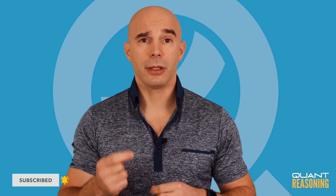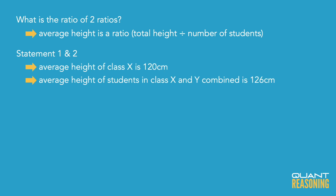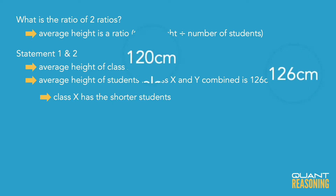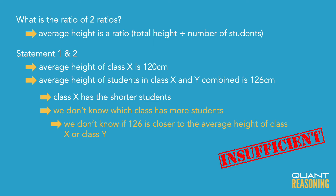If I combine the statements I can tell which class has the taller students, but I can't tell how much taller they are as a ratio. Class X has the shorter students on average — they're six centimeters shorter than the overall average — but what's the average height in class Y? It's more than 126, but since I don't know which class has more students, I can't tell whether 126 is closer to 120 or closer to class Y's average, and I certainly can't determine the ratio of the average height in class Y to class X.